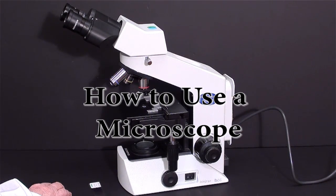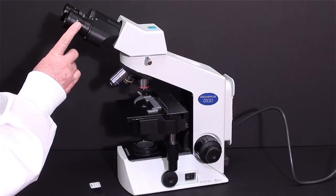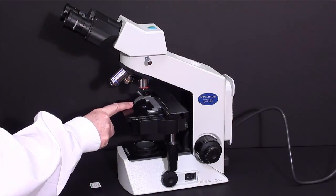Let's take a look at the major parts of a light microscope. These are the ocular lenses. These are the objective lenses. This is the stage.